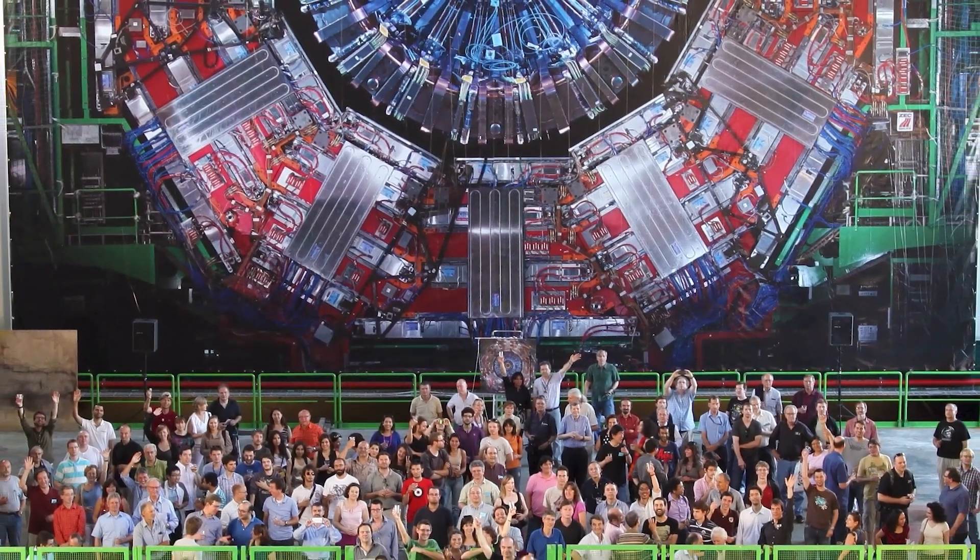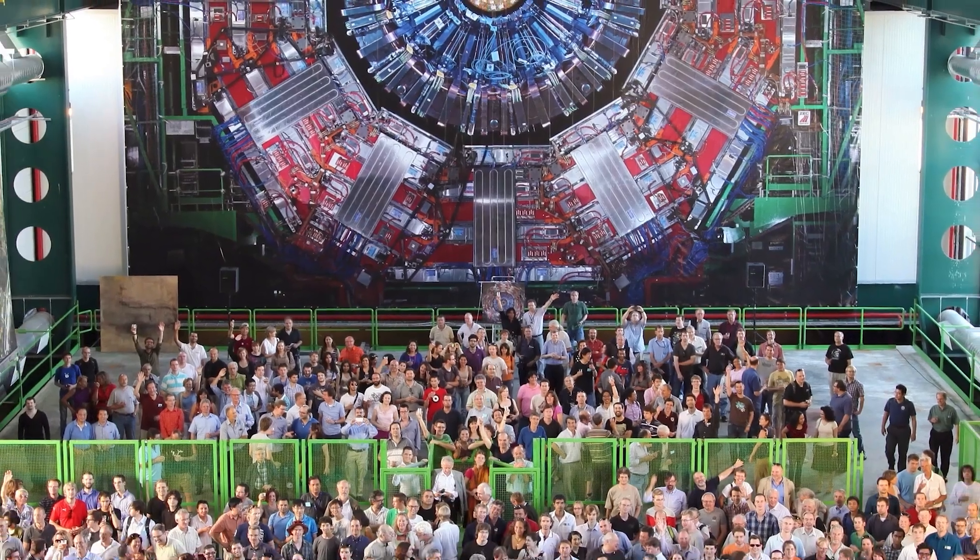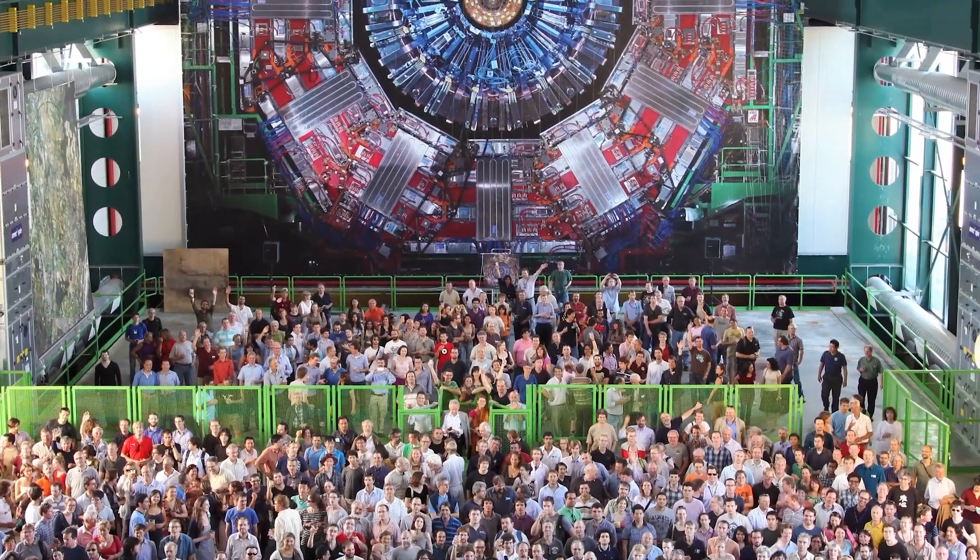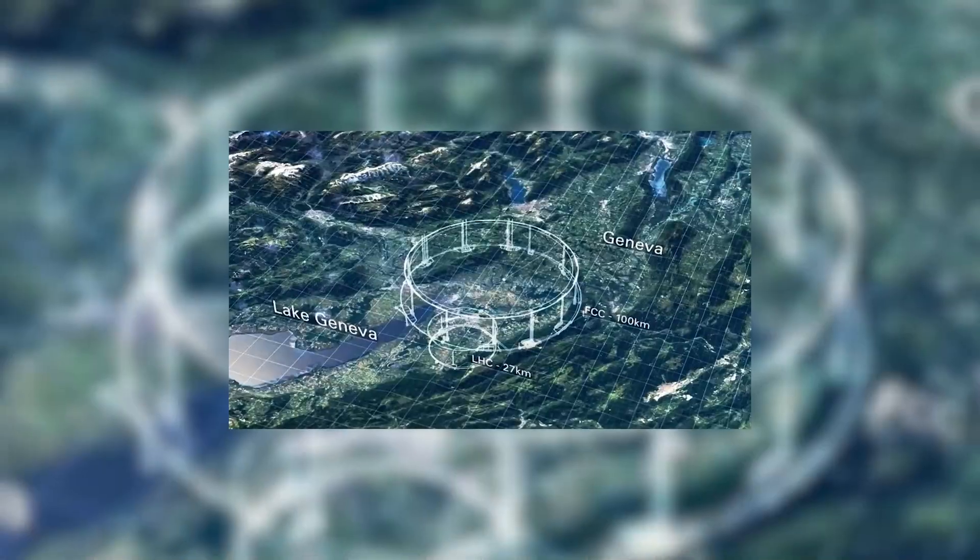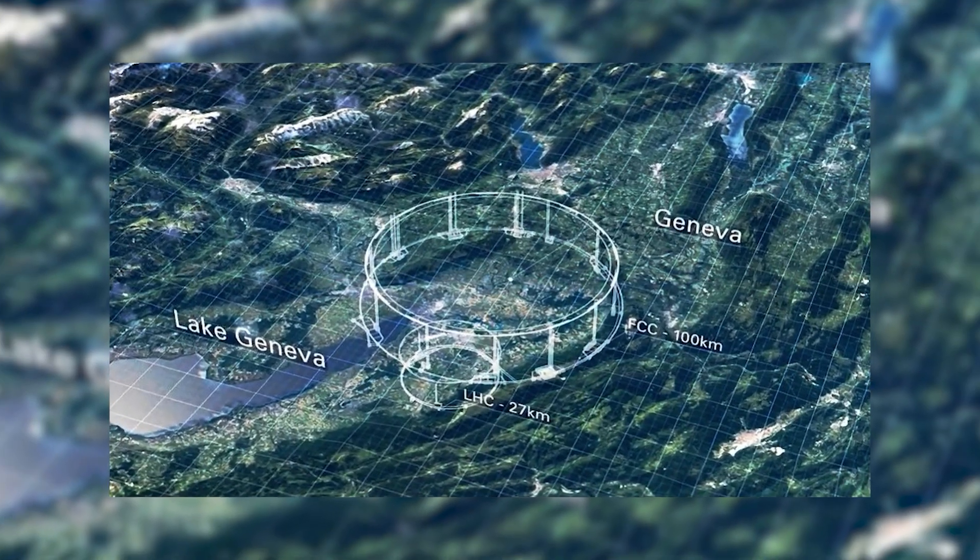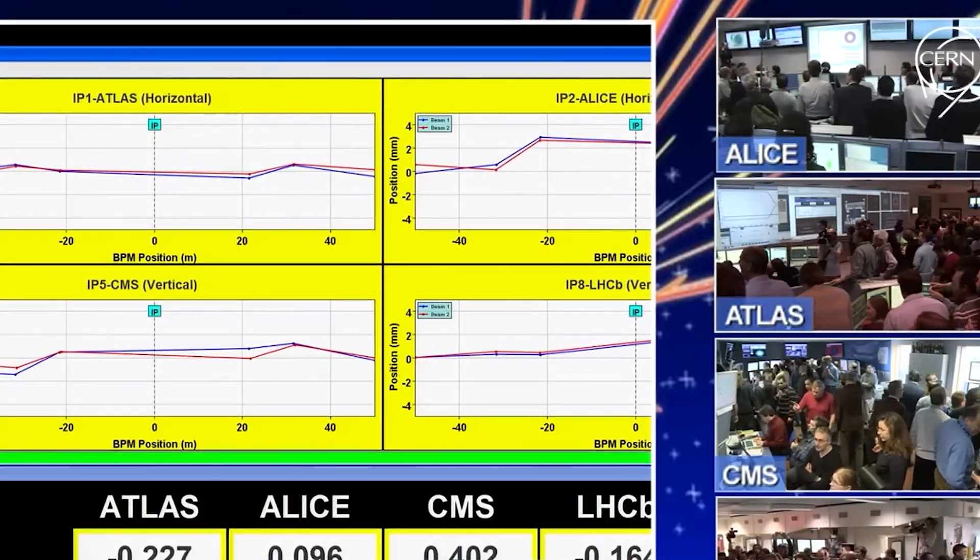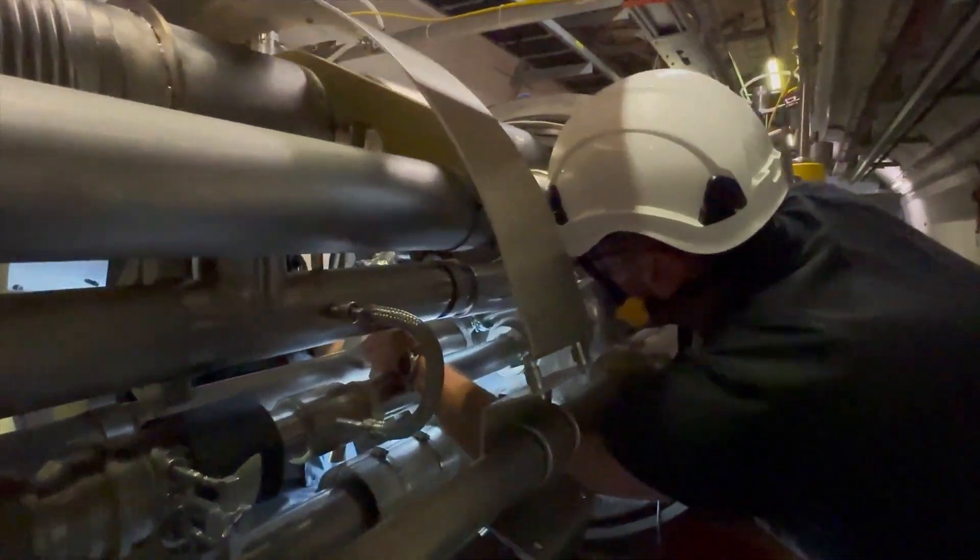CERN, with the help of over 10,000 scientists from many countries, built the biggest and most powerful particle collider from 1998 to 2008. It's a 27-kilometer tunnel under the border of France and Switzerland. The first time particles collided with this collider was in 2010, and it had a lot of energy. After some upgrades, it could go even faster.